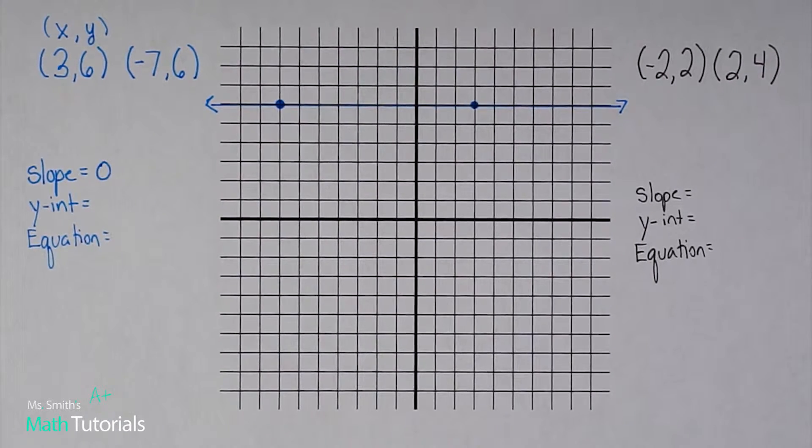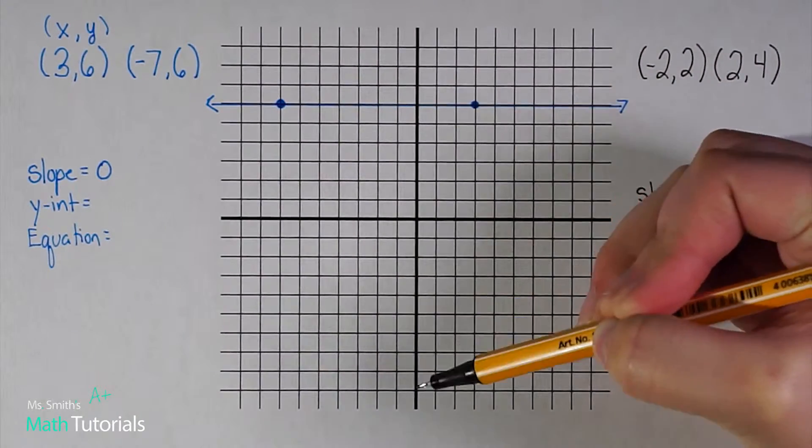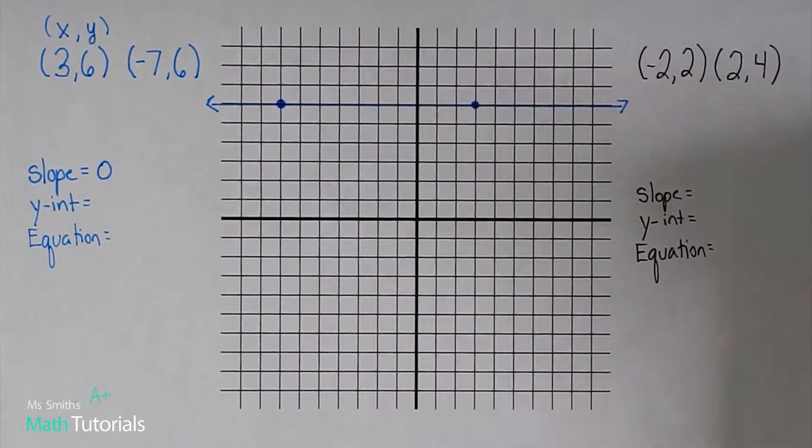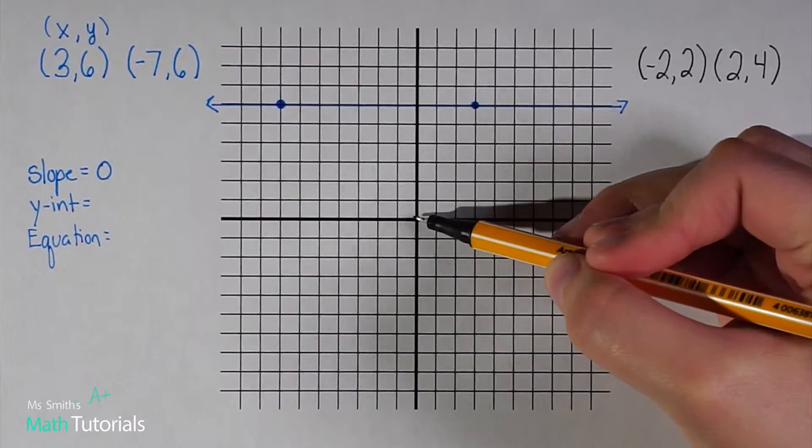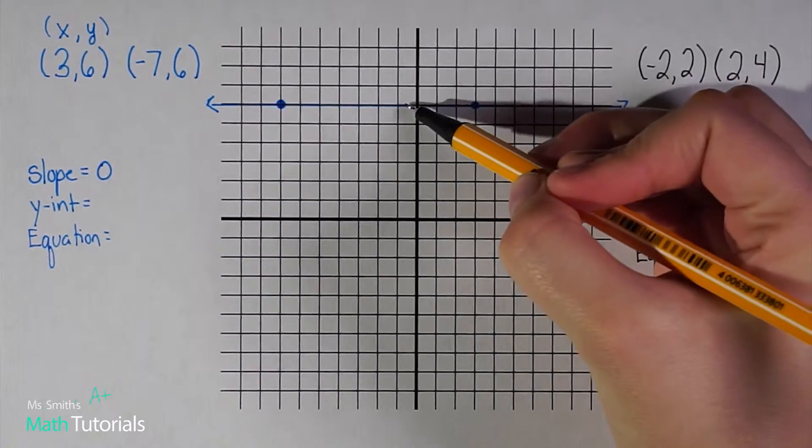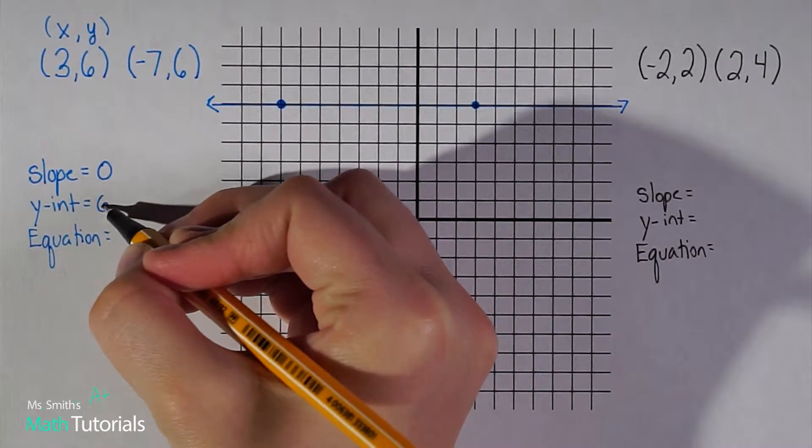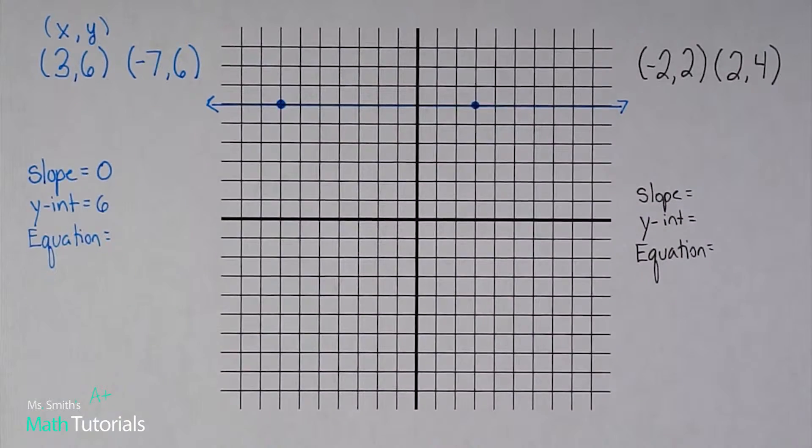Now to find my y-intercept, I just have to look at my y-axis and determine where my blue line crosses the y-axis. If I count up one, two, three, four, five, six, it crosses at positive six. Now I have enough information to write an equation.